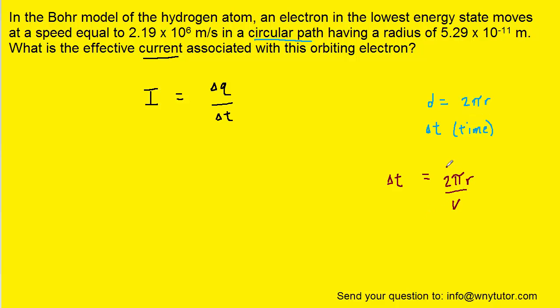Next what we'll do is take this expression for delta T and plug it into the current formula. So in other words we're replacing delta T with the expression 2 pi r over v.